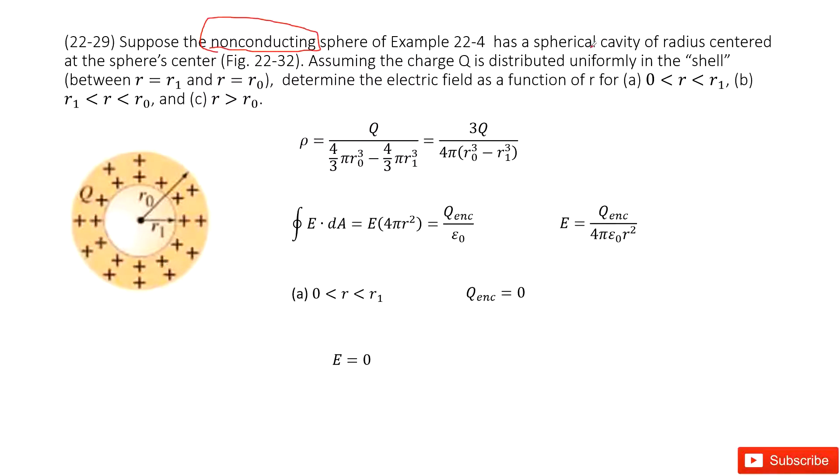And it has a spherical cavity. The radius is R₁. And then, the total charge for this non-conducting spherical object is R₀.